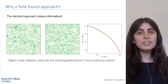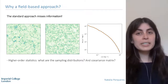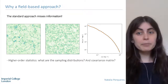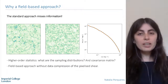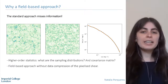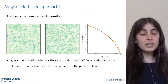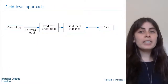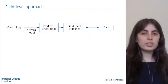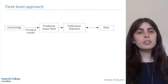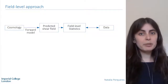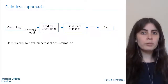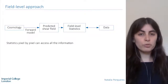Luckily we have an alternative that is much simpler from the point of view of physics, allows us to access all the information in the data, and that is to use a field-based approach. The idea is to analyze the data directly at the level of the pixelized shear without compressing them into a set of summaries. Given some cosmology, we build a predicted shear field and compare it to the data at the field level. By doing all the statistics pixel by pixel, we can in principle access all the information in the data and make full use of the observations.